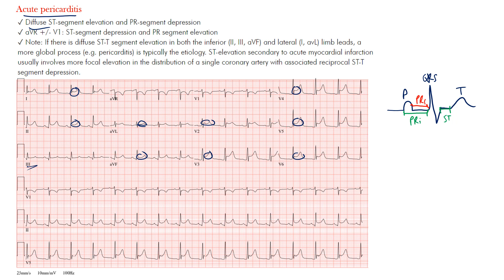What we often see in pericarditis is diffuse PR segment depression — the PR segment drops down and the ST segment goes up. You can see the elevated ST segment and the depressed PR segments here. You can also see this in lead two. It's diffuse, meaning it appears not only in a few leads but throughout the whole EKG, because the entire pericardium layer is inflamed.